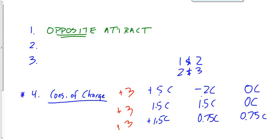What's the second one? Like charges repel. What do we mean by like charges? Positive and positive, negative and negative — like charges repel each other, meaning they push each other apart. If you have a positive and a positive, they're not going to come together; they're going to repel each other. That applies to proton-proton, electron-electron, positive object-positive object, negative object-negative object — any two things that are like charges will repel each other.